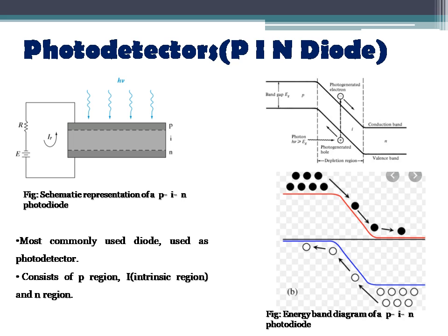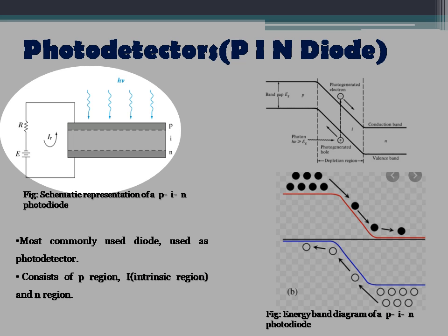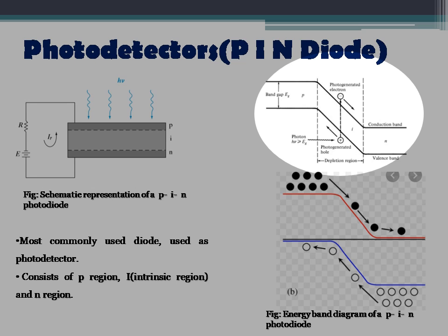The most commonly used diode as a photo detector is the PIN diode. The structure is as shown in the figure, where we have the P region, N region, and I region — which is the intrinsic region — along with a resistor R and voltage E. This PIN diode is reverse biased. If we draw the energy band diagram, we have the P, N, and I regions with reverse bias voltage E, where the Fermi energy levels are split.